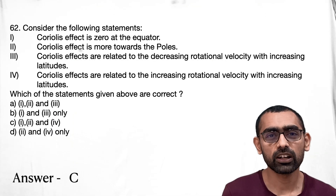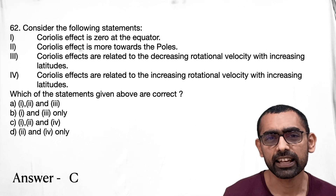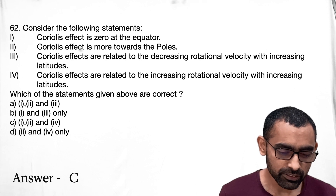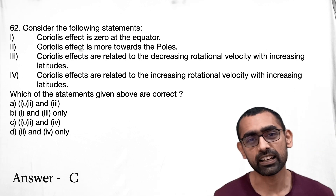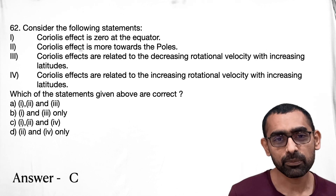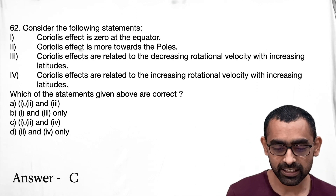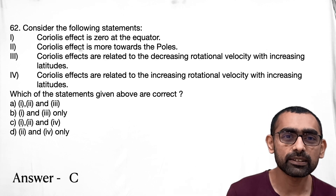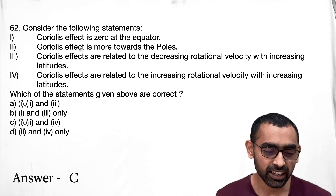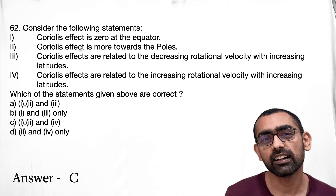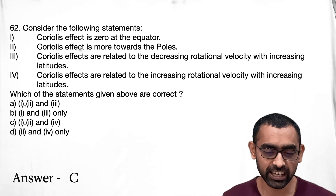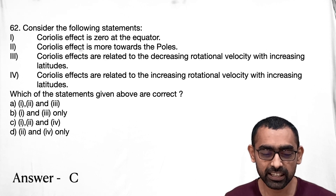Moving on to Question 62 about the Coriolis effect — a basic general science question. If you've read your NCERTs you should be able to deal with this. For tricky options, use deductive logic: if Coriolis effect is zero at the equator, then with increasing latitude it will increase, so it would be highest at the poles. If you know statement one is correct, you can guess statement two is also correct. The fourth statement is also correct, so the answer is C.